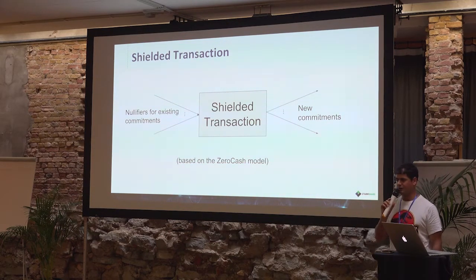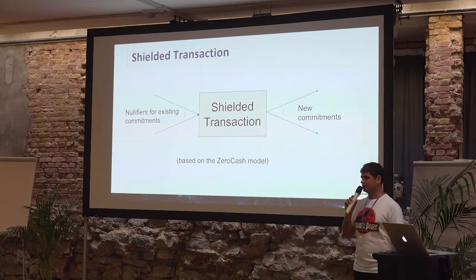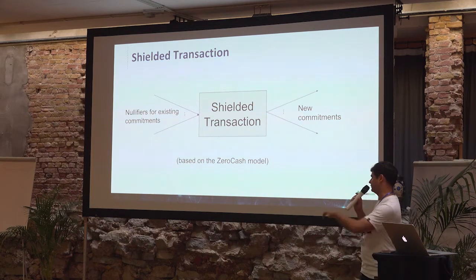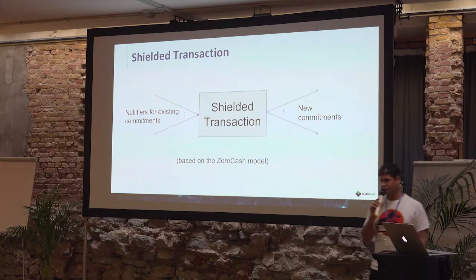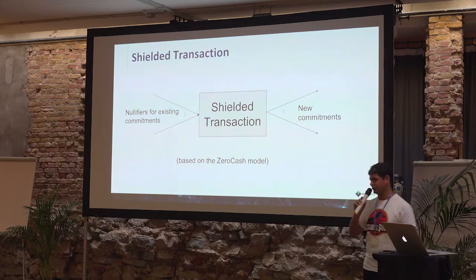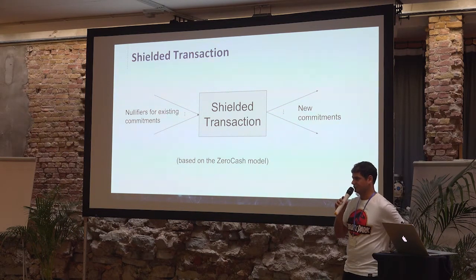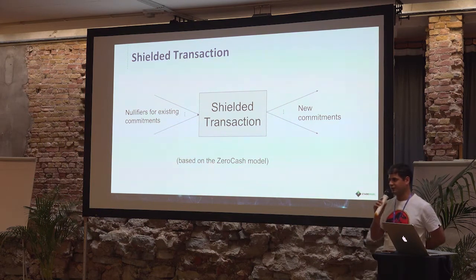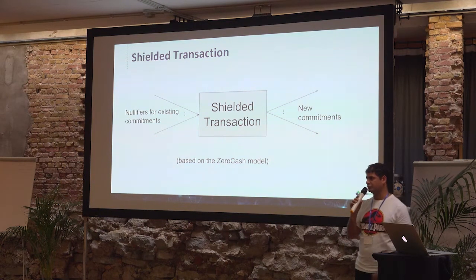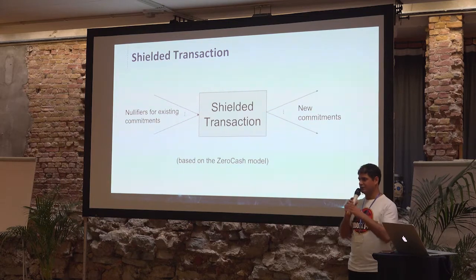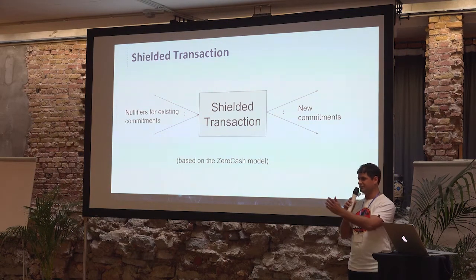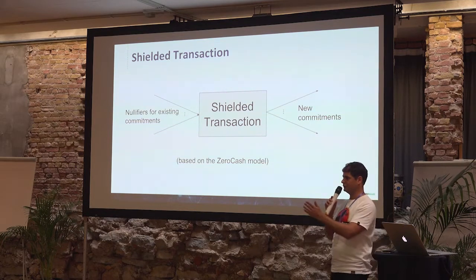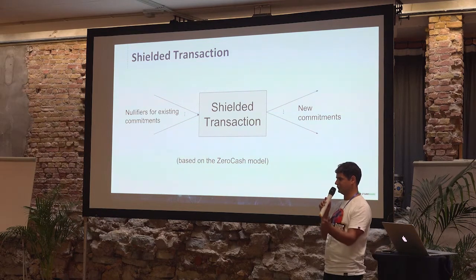The proof basically proves a few things. It proves that you know the commitment. It proves that you know the secret key that fits to the commitment. And it also proves that the amounts on the sender and receiver sides are equal — the same value. So no value is created or destroyed.